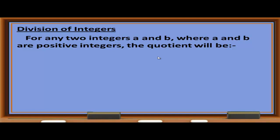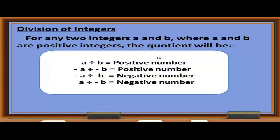Division of integers: For any two integers A and B where both are positive, A divided by B is a positive number. Positive divided by positive is positive. Negative divided by negative is positive. Positive divided by negative gives a negative number. These rules should be recalled.